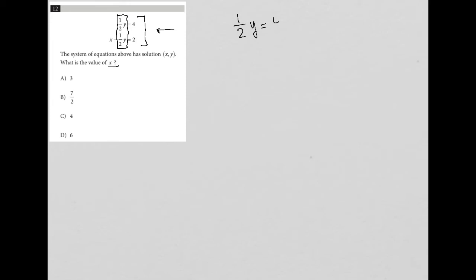I have one half y equals four and I have x minus one half y equals two. Now what this is telling me is that I know that one half y is equal to four. So what I can do is replace this one half y with four and hopefully that makes sense. One half y equals four is what we learned here.